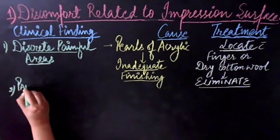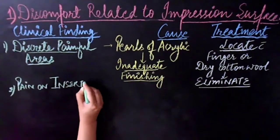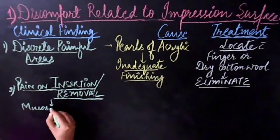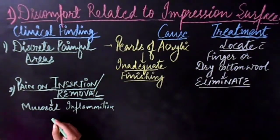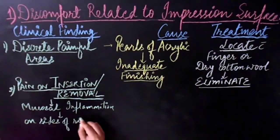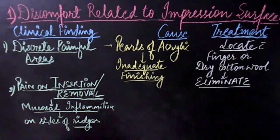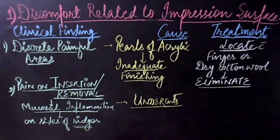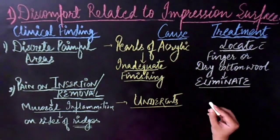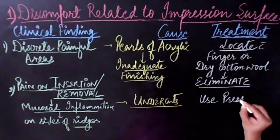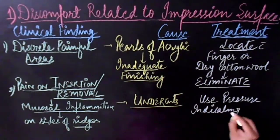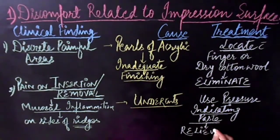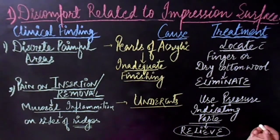If the patient comes with pain on insertion or removal of the complete denture, mucosal inflammation is most probably present. Such inflammation can be seen on the sides of the ridges and occurs mostly when the denture is not adequately relieved in the areas of undercuts. In this case, use a pressure indicating paste to identify the problematic area and relieve it accordingly. Make sure you don't over-reduce, as this would result in decreased retention and loose dentures.